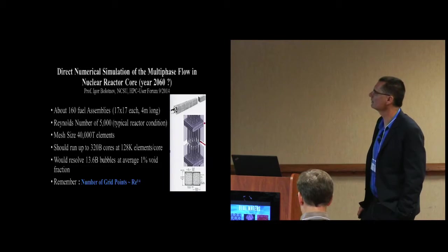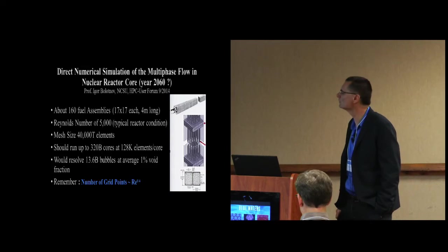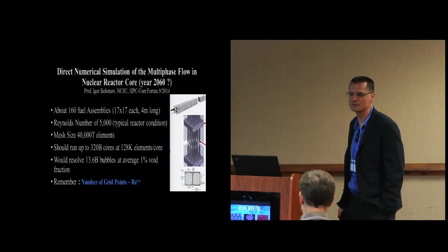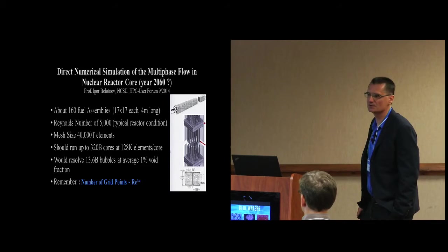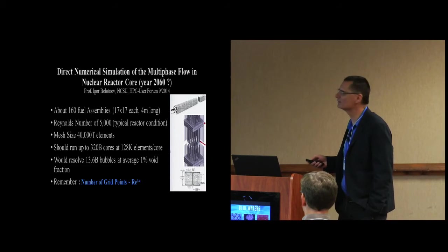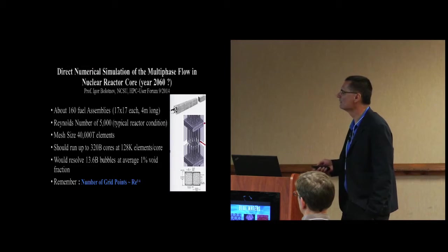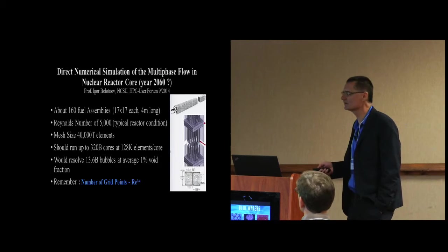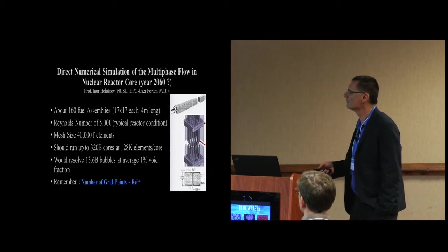Here's another one. Professor Igor Bolotnov at the Seattle HPC User Forum said my dream is to do the DNS approach, doing direct numerical simulation of the multi-phase flow in the whole nuclear reactor core. He would need a mesh of 40,000 trillion elements and should run up to 320 billion cores. Remember, our good friend or our enemy is actually Reynolds numbers. For Reynolds number of 5,000, the number of grid points is a pretty steep exponential function.